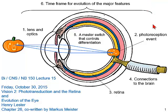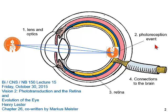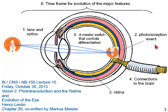Today we talk about the visual system, and there are actually six topics involved. First, lenses and optics. Then the photoreception event. Then the retina itself. Connections to the brain. A master switch that controls much of differentiation in the retina. And finally, the timeframe for evolution of the major features. So the topics for today are phototransduction and the retina, and also evolution of the eye.